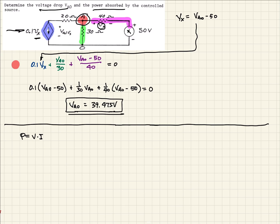So solving for the current, we will have, so our current for our current source, then it would just be 0.1 Vx, right? Well, we know Vx, we can calculate Vx from up here. That's going to be 0.1 times VA0 minus 50.